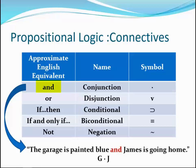In this example, the connective AND is being used to link the two statements 'The garage is painted blue' and 'James is going home.' The conjunction is symbolized by a dot. When two statements are joined by a connective, the result is called a compound statement. Particular statements are symbolized by capital letters, usually selected to remind us of the statements they represent. This example uses G and J, so the compound statement is expressed as G dot J. If the garage is not painted blue, the compound statement would be false. AND implies that both component statements must be true for the entire compound statement to be true.